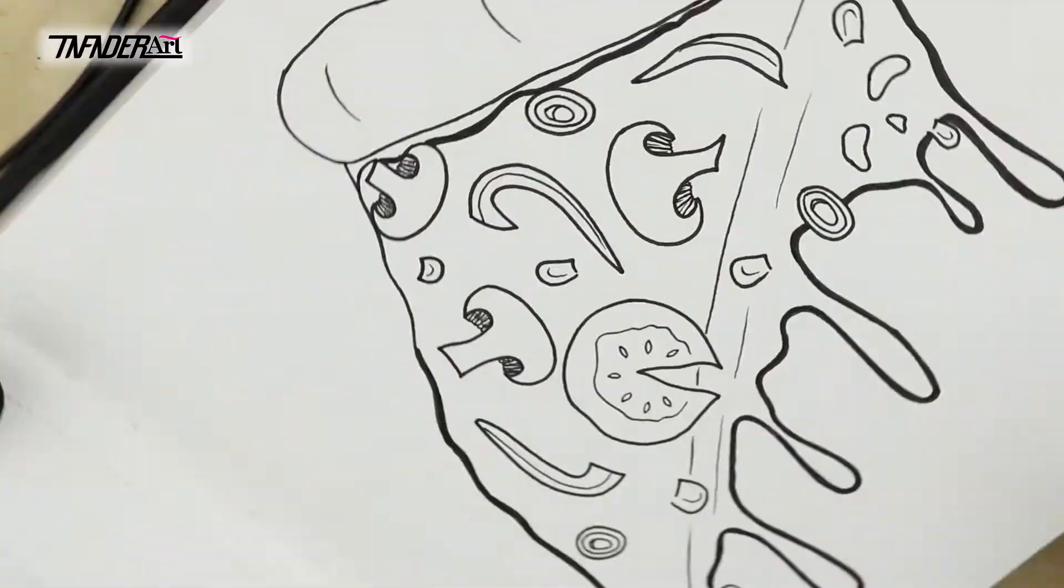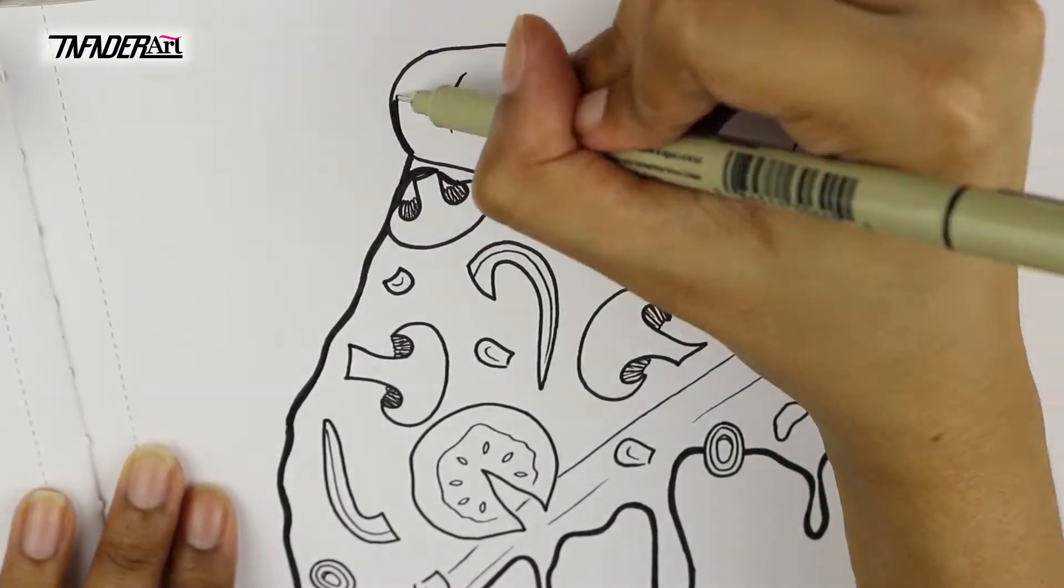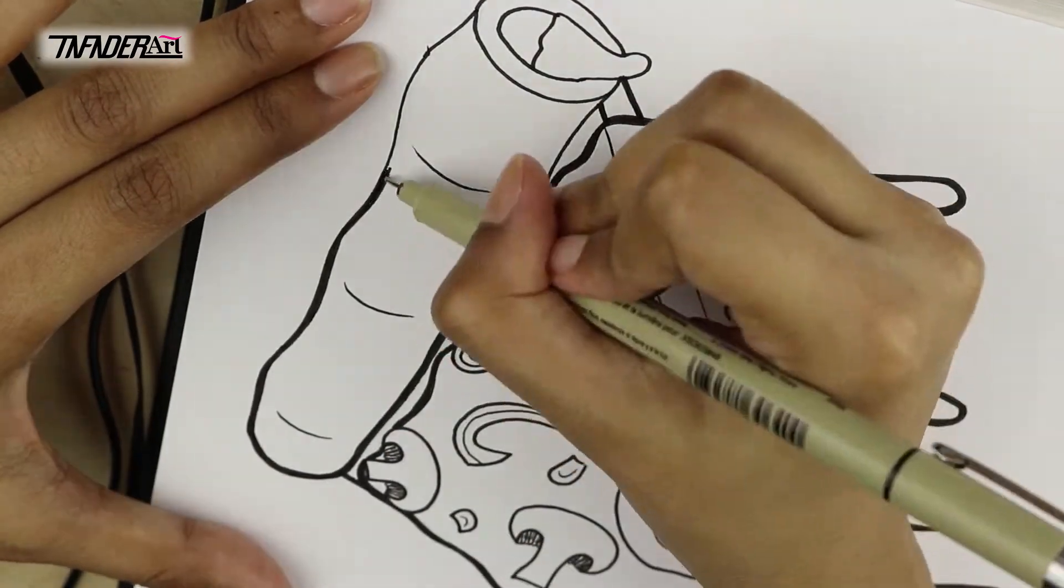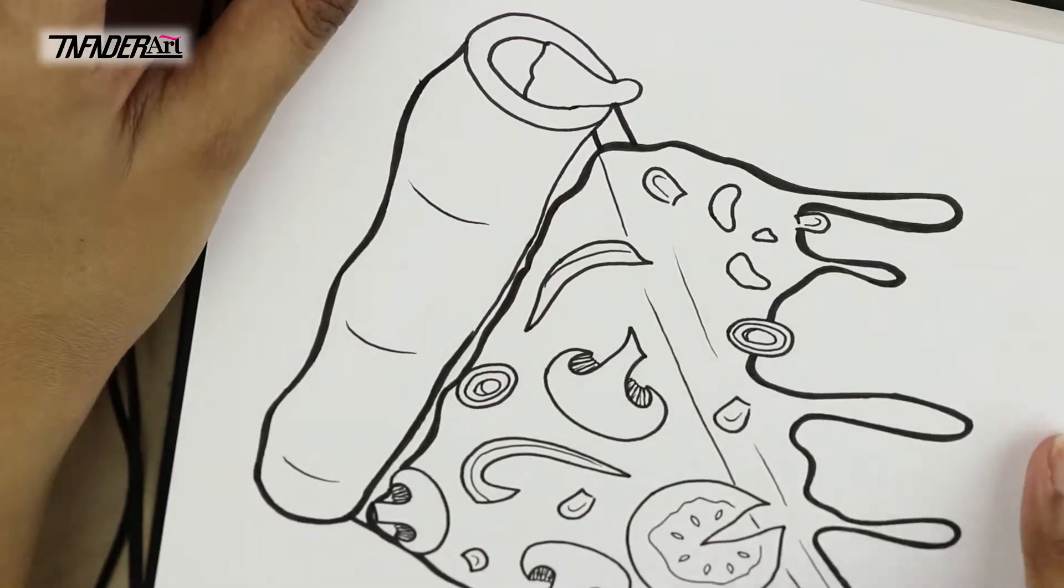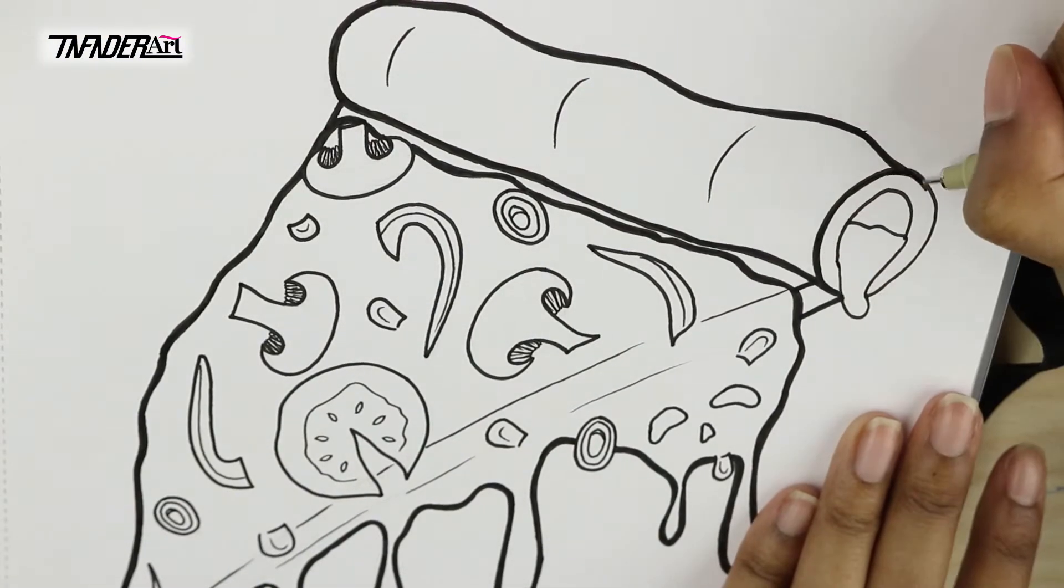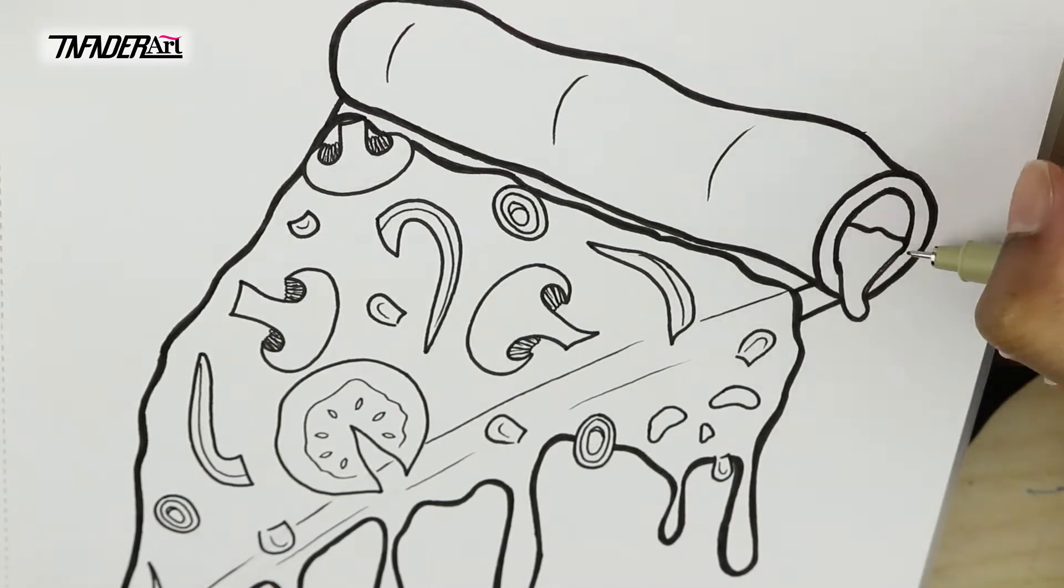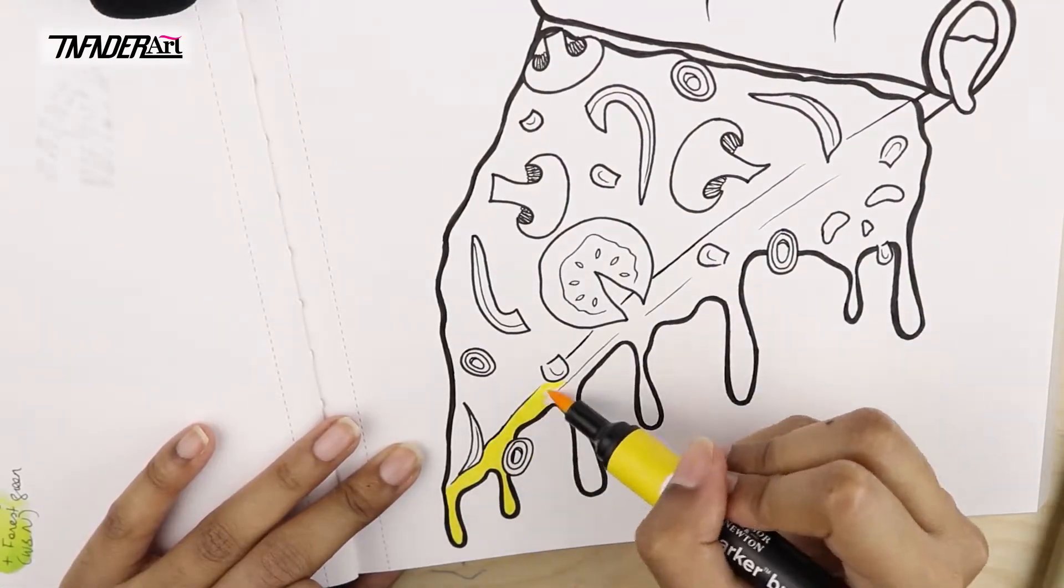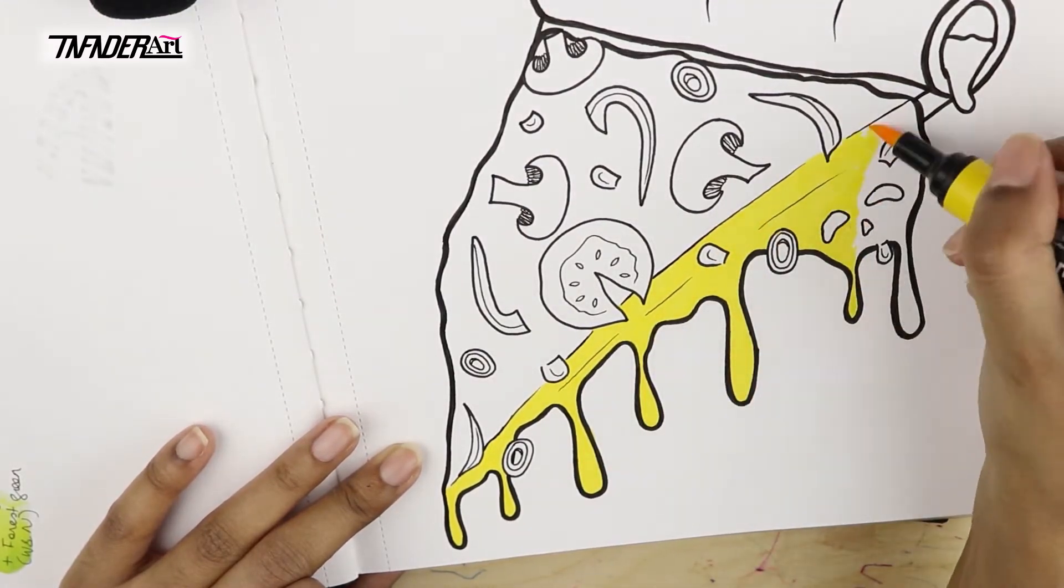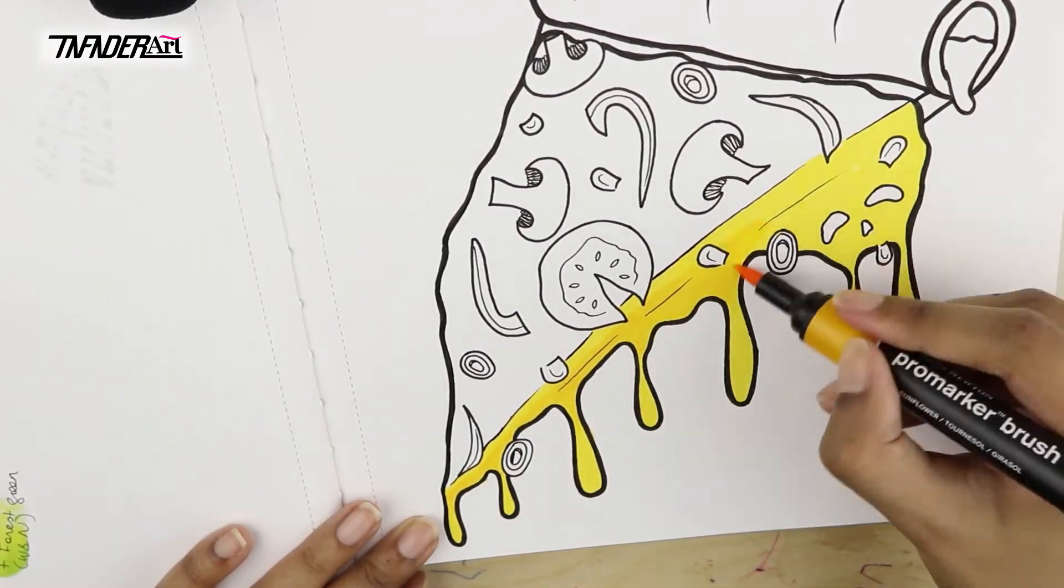I have the Windsor and Newton brush markers, and I've tested out the colors that I would like to blend in order to create this image. The reason why I'm talking as though I haven't colored the image yet is because at the time of recording this audio, I haven't—I have a feeling I just won't have time to record the audio later on. So I'm hoping that the coloring process goes exactly as I describe it here.